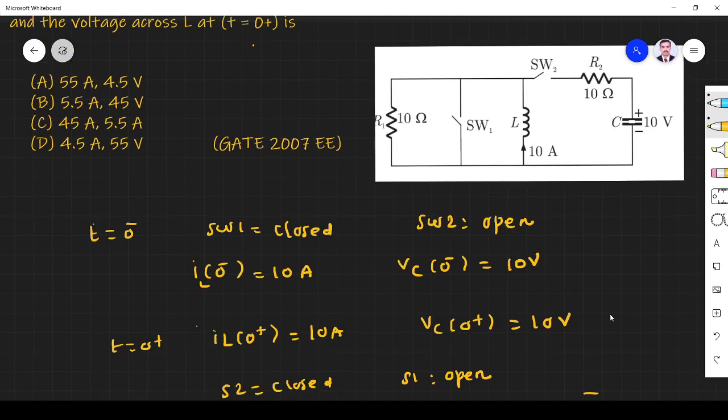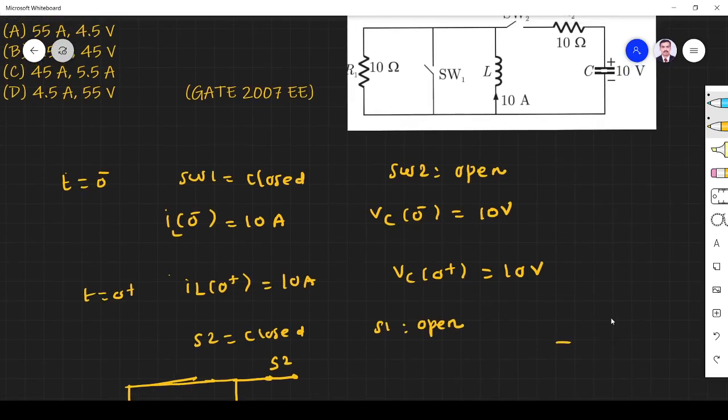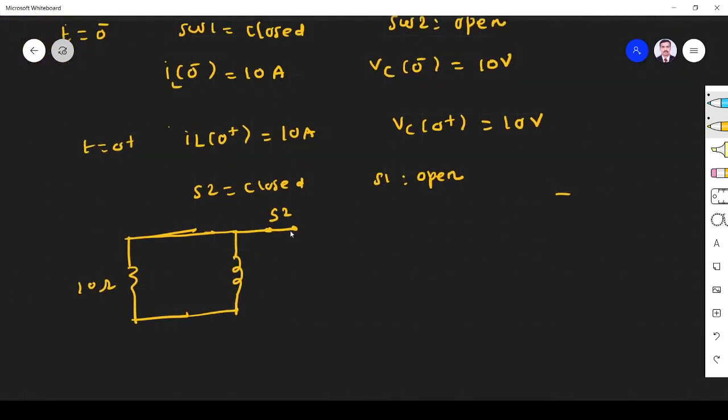The inductor will be there. Next, the switch S2 is closed, S1 is open. Next, there's a 10 ohm resistor and a 10 volt capacitor with the polarities they have given, polarities is positive 10. Now current through the inductor is going, so I_L(0+) equals 10 ampere.